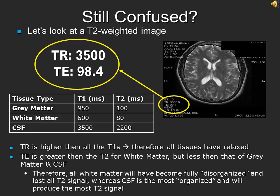Let's look at a T2 weighted image of the brain. We know it is a T2 weighted image because it has a long TR of 3500 and a long TE of 98.4. Because the TR is higher than that of all the tissues in the brain, they all have fully relaxed at the time this image is taken. The TE, however, is around that of the gray matter, higher than the white matter and a lot less than the CSF. Therefore, all white matter will have become fully disorganized and lost all T2 signal, whereas CSF is the most organized and will produce the most T2 signal.